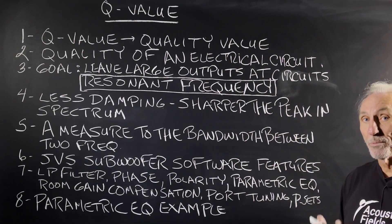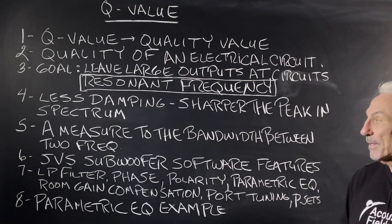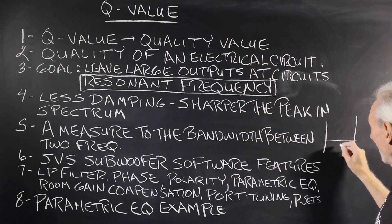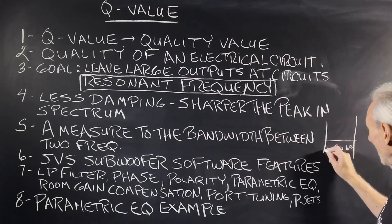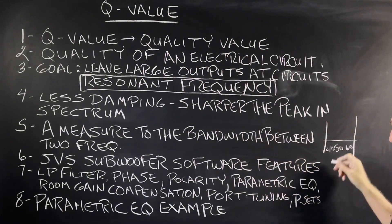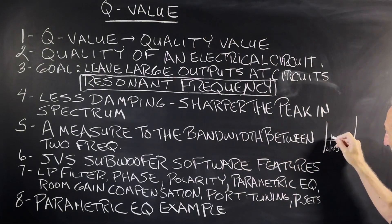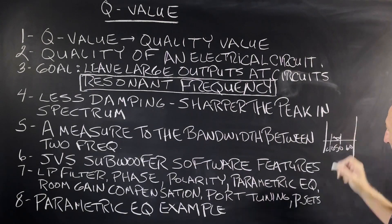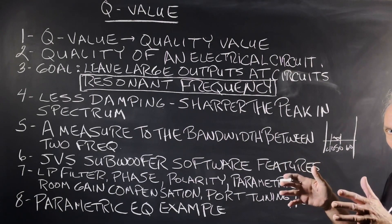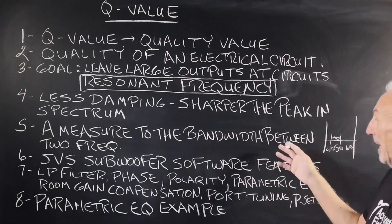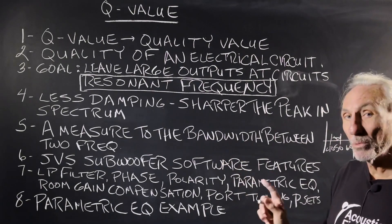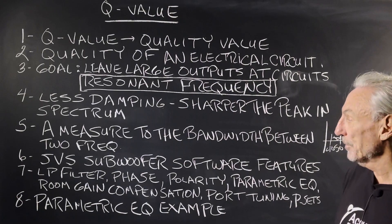We're going to walk through a real-time example of that. It's really a measure of the bandwidth between two frequencies — so let's just take 40 and 50 — it's this area here that we're looking at. That bandwidth, the frequency range between two frequencies. I'm going to quit talking and let's use a real live example, and I think you'll understand.